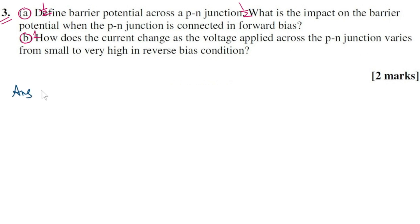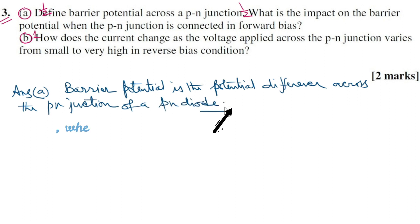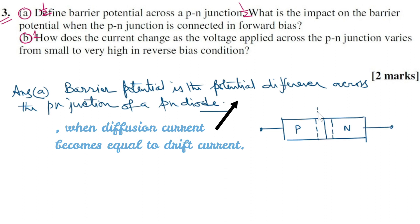Now answer Part A. Barrier potential is the potential difference across the p-n junction of a p-n diode. In this diagram it is represented by Vp.